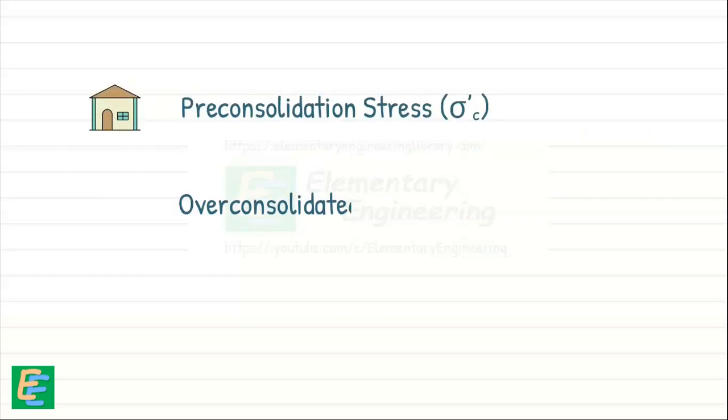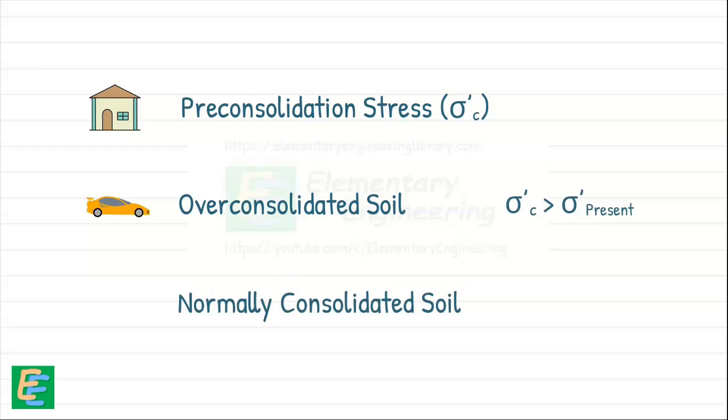Based on this, we can say a soil is considered as overconsolidated if the existing effective stress is less than the pre-consolidation stress. Also, soil is normally consolidated if the existing stress is equal to the pre-consolidation stress. This means current effective stress represents the maximum stress the soil has ever encountered throughout its history.